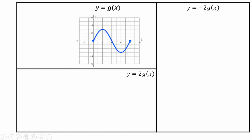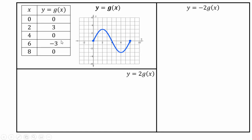Now you're given a base graph of g(x) — not one of the standard library functions. It's beneficial to make a chart of key points: (0,0), (2,3), (4,0), (6,-3), (8,0) — these define the basic shape. Pause the video, plot those points, and see what you can do.